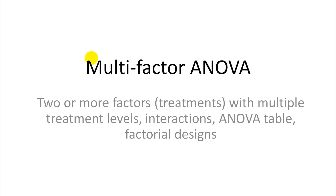In this video we cover multi-factor analysis of variance, and it's a pretty simple extension of what we already covered. So instead of one treatment level like we had before — just varieties — we introduce more treatments in our analysis of variance. Each of those treatments then has multiple treatment levels. In our example we had variety with treatment levels A, B, C, and as another factor we had farm locations, F1 and F2, for two different experimental farm sites.